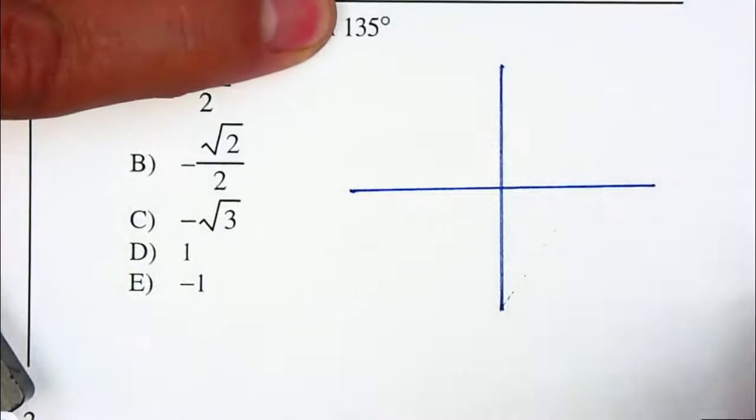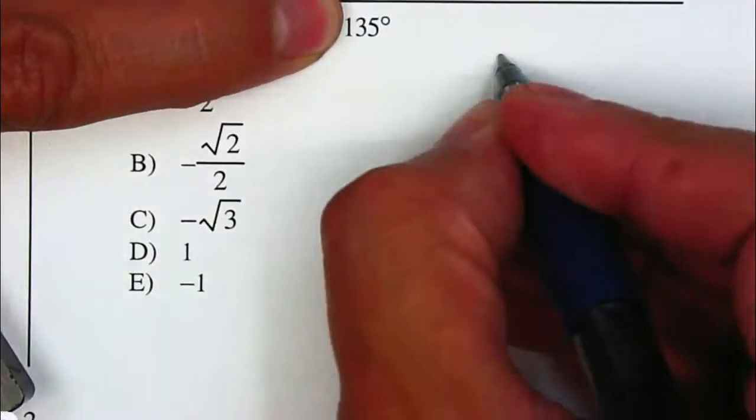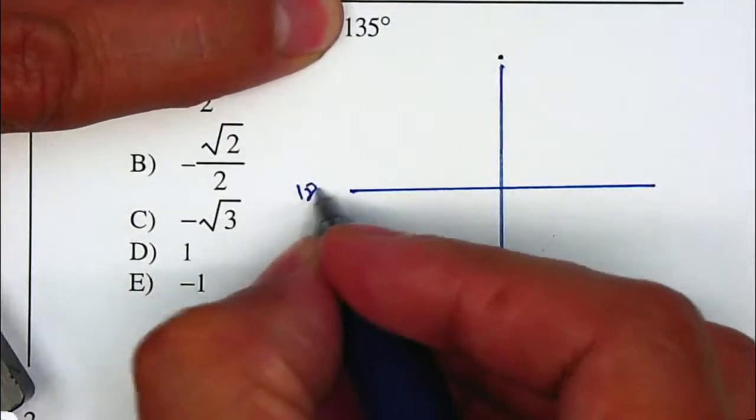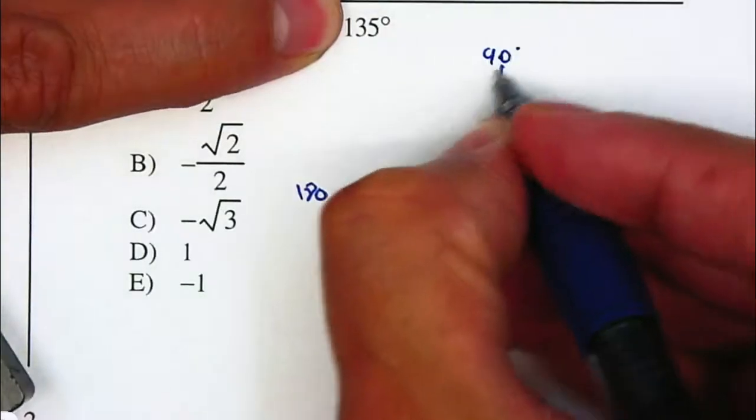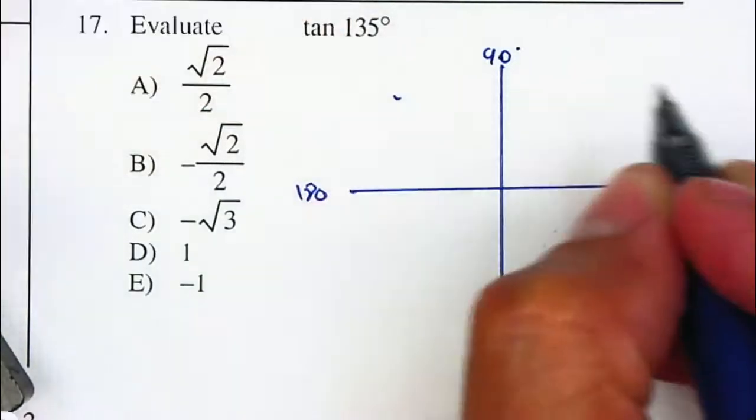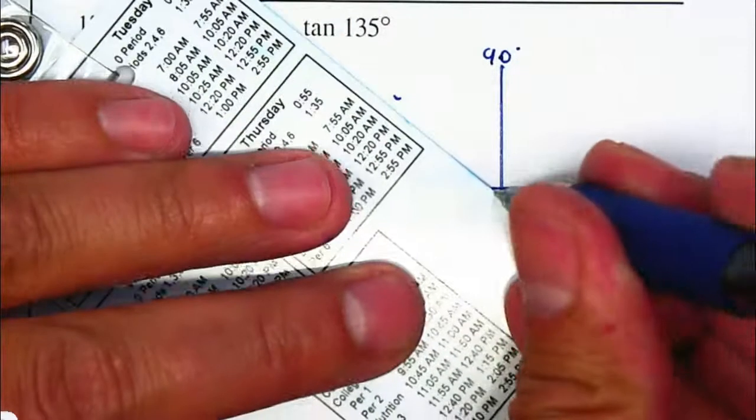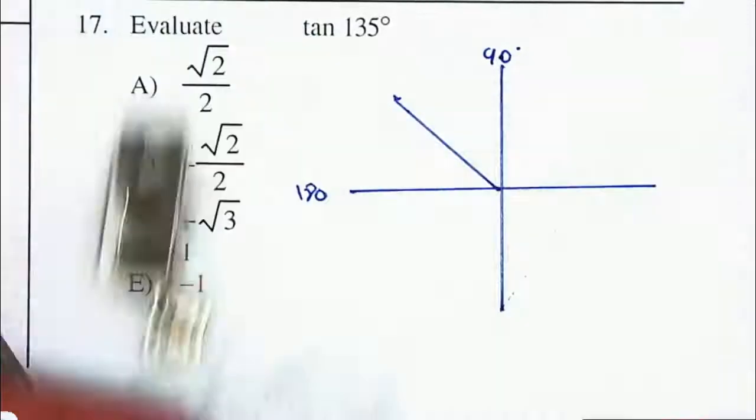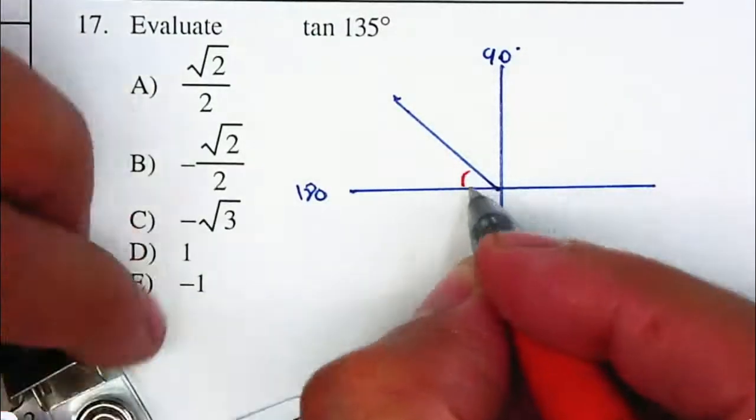First I need to locate where is 135 degrees. I know this is 90 and this is 180, so the 135 degrees is my halfway mark and that will form a 45 degrees angle as a reference angle.